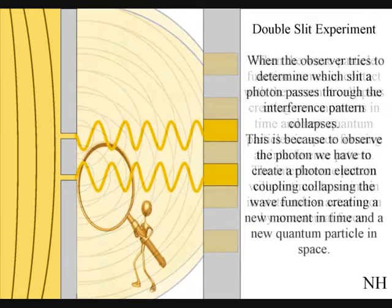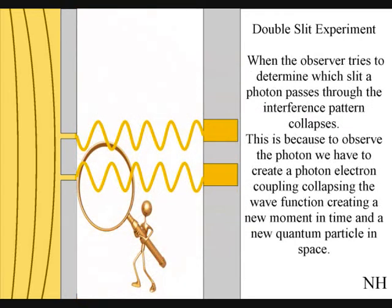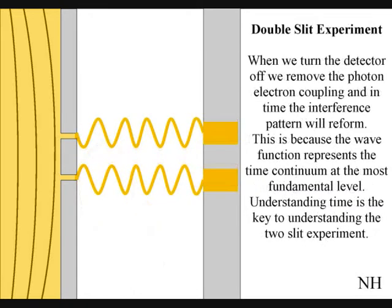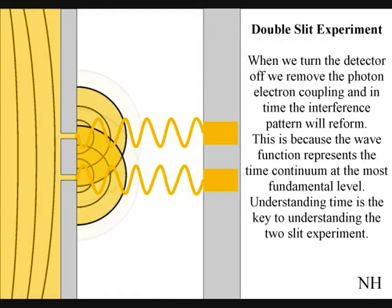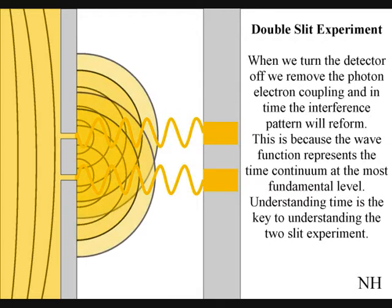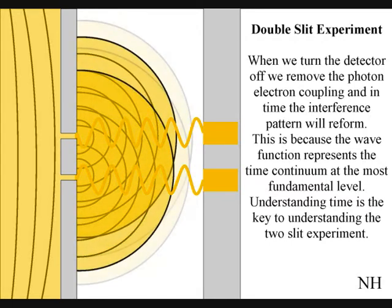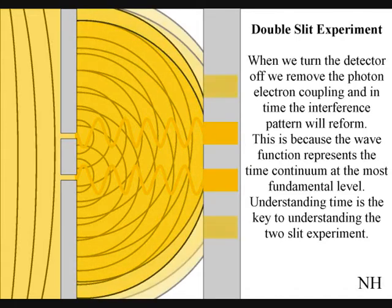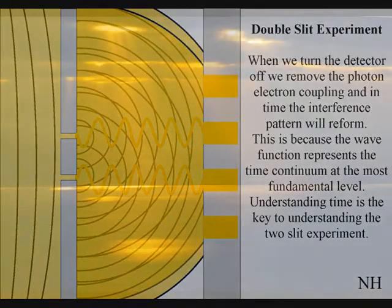The observer interacts with this experiment by turning on or off an electronic detector, forming a photon-electron coupling, or dipole moment, relative to the experiment. I will place a link above that explains this experiment.